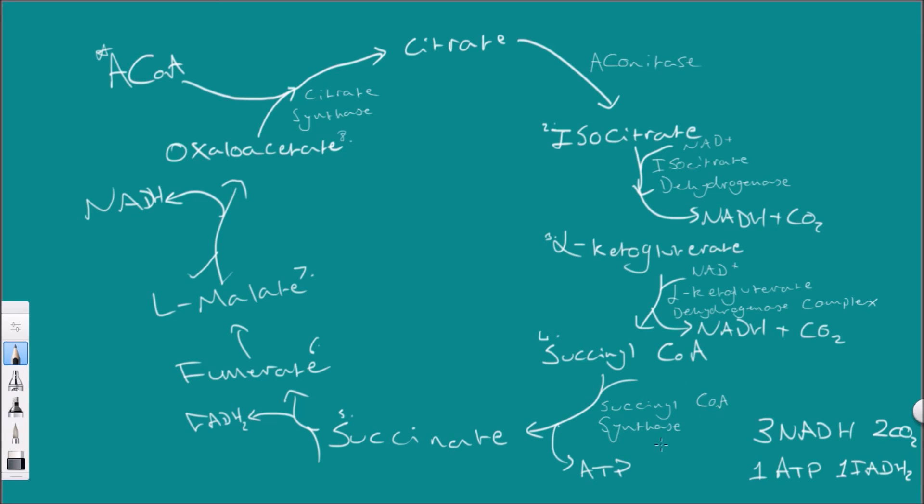Then from this succinate to fumarate, there is another dehydrogenase because FAD is going in and being converted into FADH2, so some hydrogen is picked up, meaning we have succinate dehydrogenase.